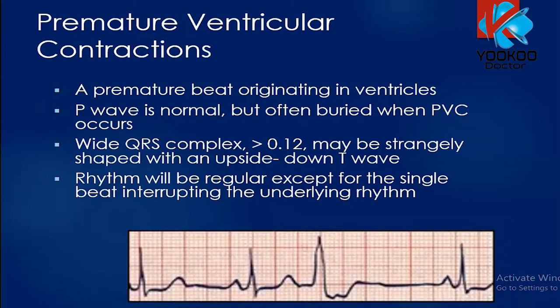Premature ventricular contraction (PVC) is a premature beat originating in the ventricles. The P wave is normal but is often buried when a PVC occurs. The distinctive feature of PVC is a wide QRS complex — you can see one abnormal wave that looks different from the others, with a strange shape and an abnormal T wave. The rhythm is regular except for those single beats interrupting the underlying rhythm.